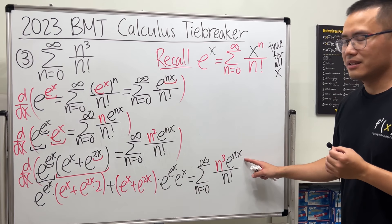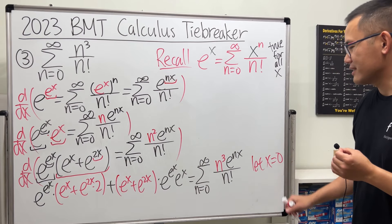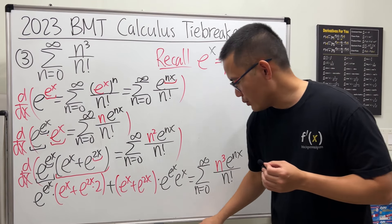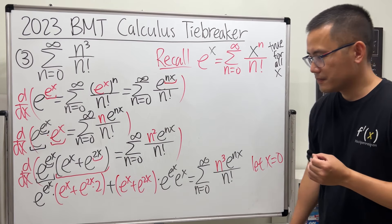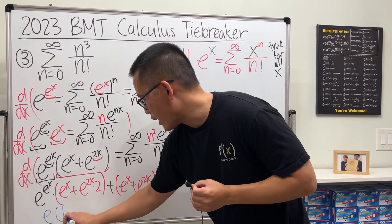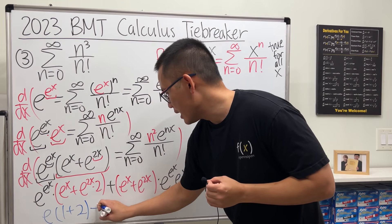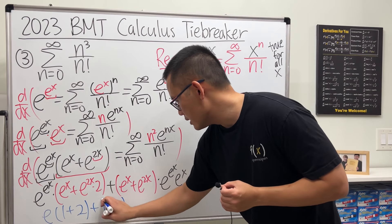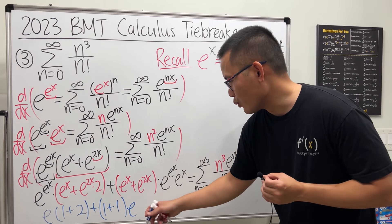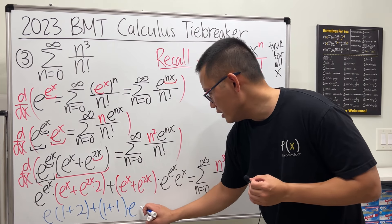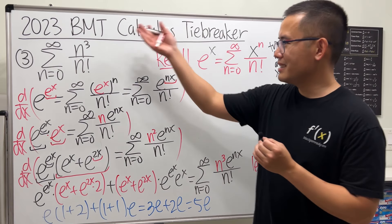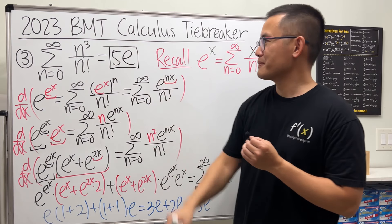Now all we have to do is plug in x = 0, so that e to the 0 is just 1. Letting x equal 0: e to the 0 is 1, so e to the 1 is just e. Then e to the 0 is 1, so this is 1 times 2, plus this is 1 plus e to the 0 which is 1, and e to the e to the 0 is e. Lastly, e to the 0 is 1. Altogether, this right here is 3e plus 2e, giving us 5e. So the answer for this series is 5e.